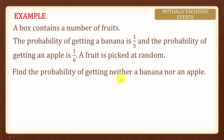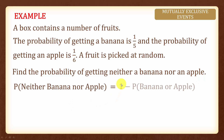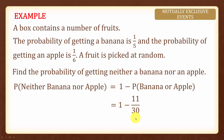Next we are asked to find the probability of getting neither a banana nor an apple. We can use 1 minus the probability of getting either a banana or an apple, which is 1 minus 11 over 30. The probability of not getting either of them is 1 minus 11 over 30, which gives us 19 over 30.